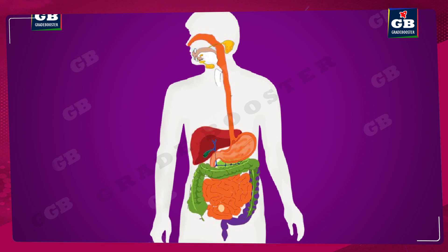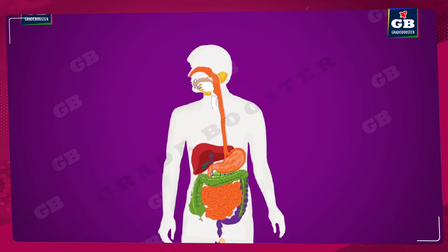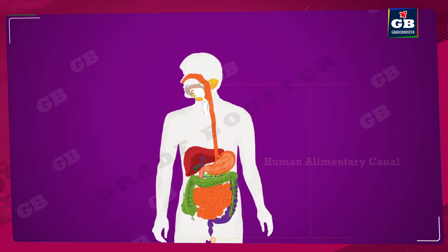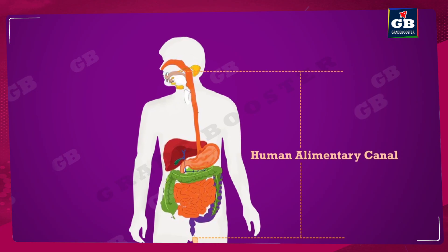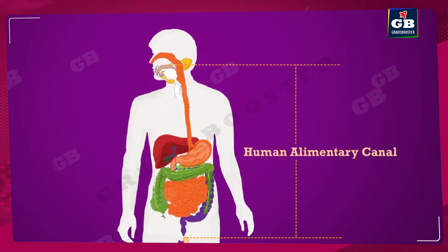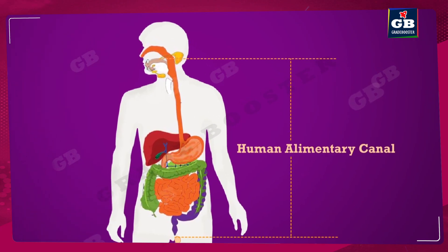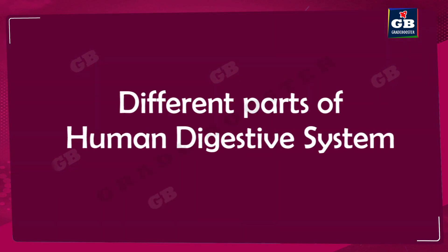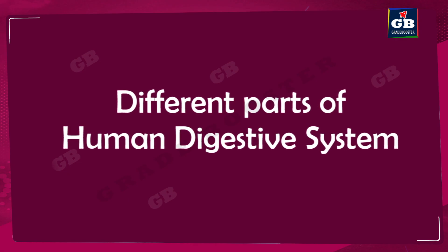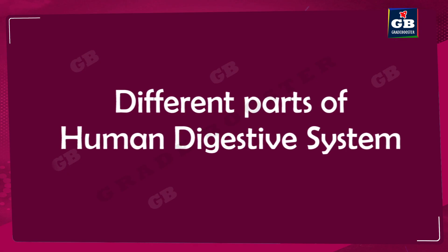This food travels through different parts of the digestive system, and the undigested food is finally excreted through the anus. Now let us see the different parts of the human digestive system.